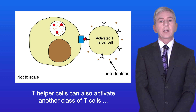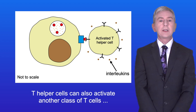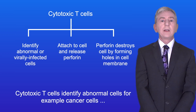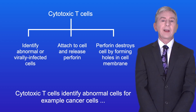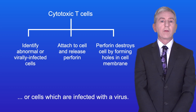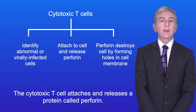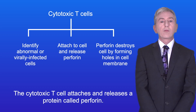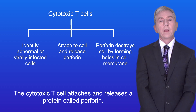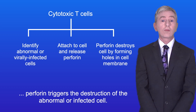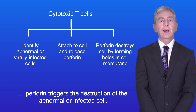T helper cells can also activate another class of T cells called cytotoxic T cells, or T killer cells. Cytotoxic T cells identify abnormal cells — for example, cancer cells or cells infected with a virus. The cytotoxic T cell attaches and releases a protein called perforin. By forming holes in the cell membrane, perforin triggers the destruction of the abnormal or infected cell.